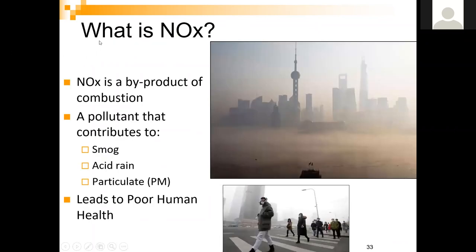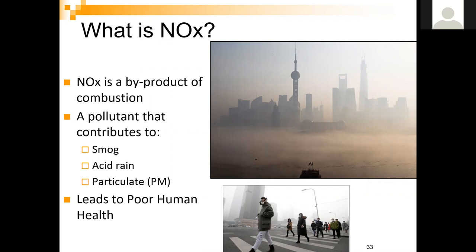NOx is basically nitrous oxides — NO, NO2, NO3, NO4 — all considered part of the NOx family, aggregated when measured into a weighted percentage and measured as PPM or pounds per million BTU. NOx contributes to smog, acid rain, and particulate matter in the atmosphere and can lead to poor human health. We want to lower and eliminate as much NOx from flue gas as possible.